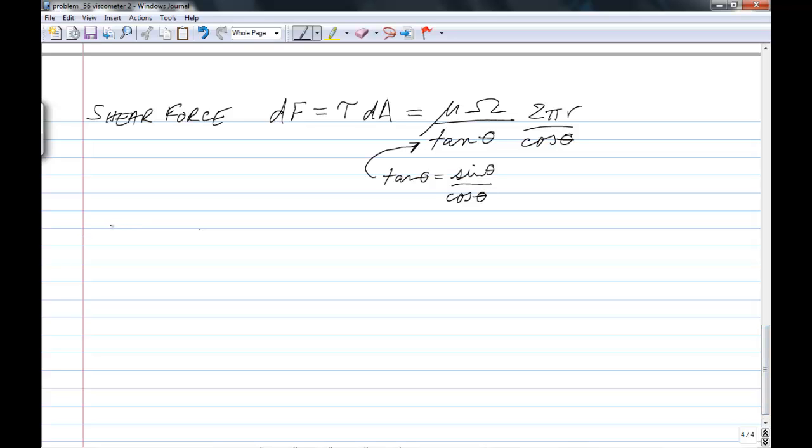So dF, the differential force on that little area, becomes 2 pi, just rearranging a little bit, mu omega—oops, I forgot a dr up here, didn't I?—r dr upon sin theta, noticing that the cos thetas cancel.